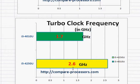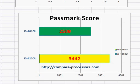Let's take a look at the PassMark score. The PassMark benchmarking results prove that the i5-4250U is significantly better than the i3-4010U.